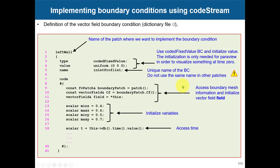We select faces and from those faces we inject flow. In the U dictionary for velocity, we use codeFixedValue with the standard template to access variables. The syntax is: `codeFixedValue`, `value uniform`, a dummy value for ParaView, and a unique identifying name for this boundary condition. If you have multiple boundary conditions using codeFixedValue, each name must be different.